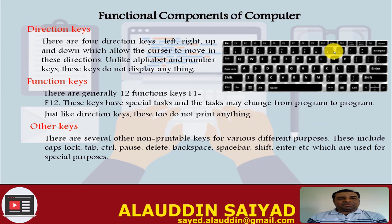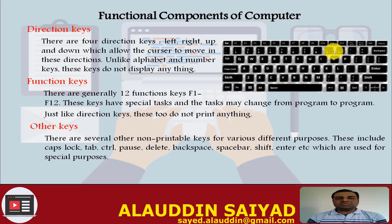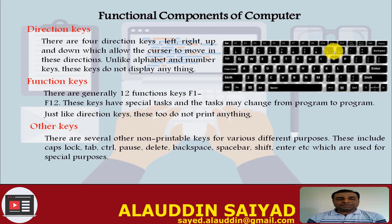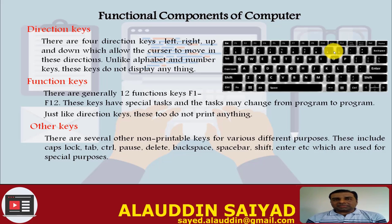Direction keys: there are 4 direction keys — left, right, up, and down — which allow the cursor to move in those directions. Unlike alphabet and number keys, these keys do not display anything on screen. Function keys: there are generally 12 function keys from F1 to F12. These keys have special tasks and the task may change from program to program. Like direction keys, these do not print anything.